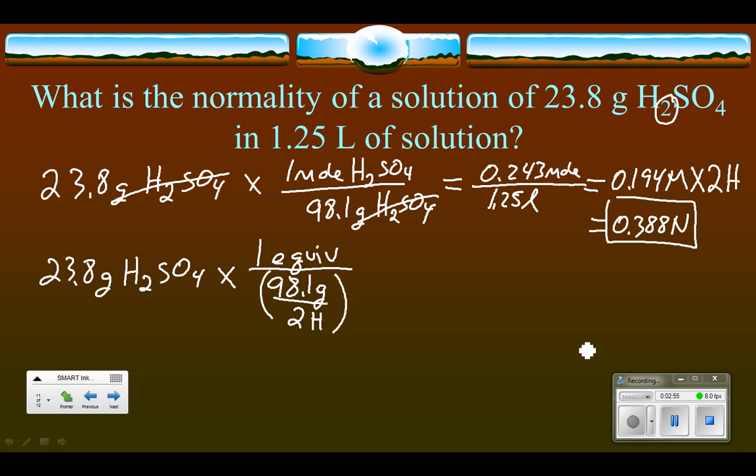And so it ends up being 23.8 grams of H2SO4 times one equivalent over 98.1 grams. So the grams of this will cancel out the grams of that. And this time, instead of 0.243, my calculator tells me it's 0.485, and that's the equivalents of H2SO4.